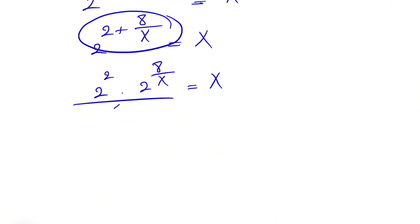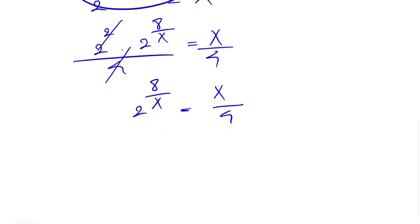Now we're going to divide each side of the equation by 4. So on the left side we end up with 2 to the power of 8 over x, and on the right side we will have x over 4. The question is how we're going to find this.